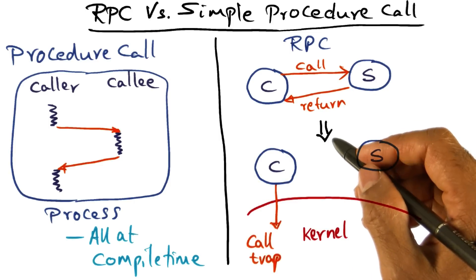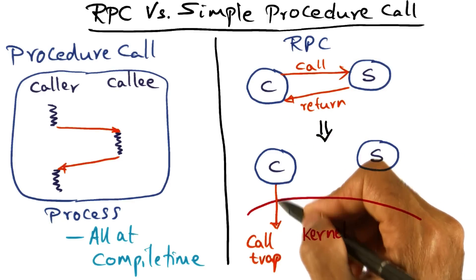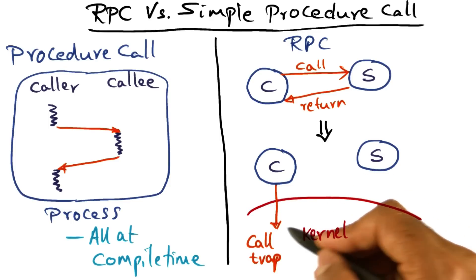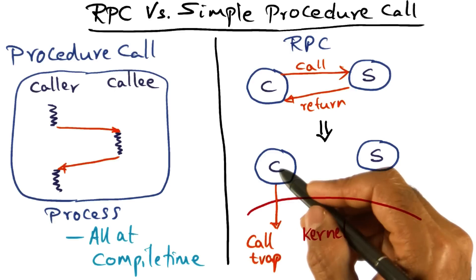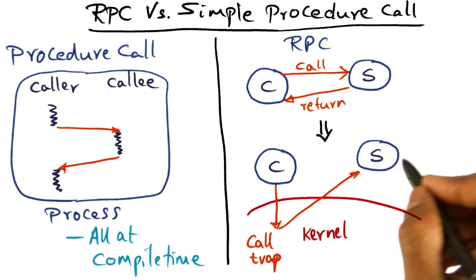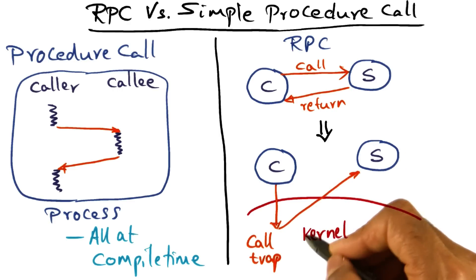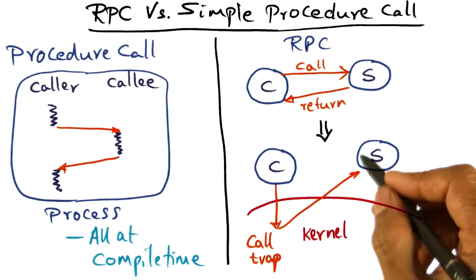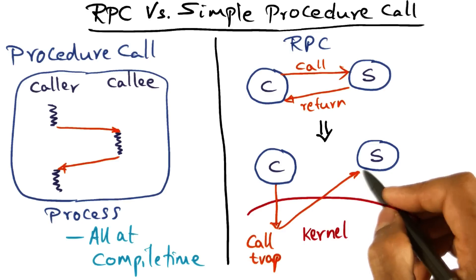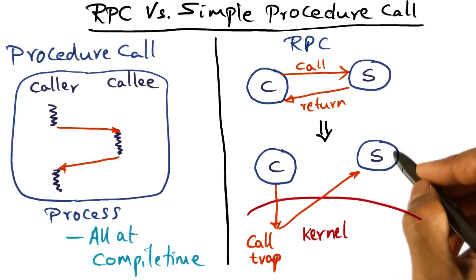But under the cover, when the caller makes this call, it really is a trap into the kernel. What the kernel does is validate the call and copy the arguments of the call from the client address space into kernel buffers. The kernel then locates the server procedure that needs to be executed and copies the arguments from the kernel buffer into the address space of the server.